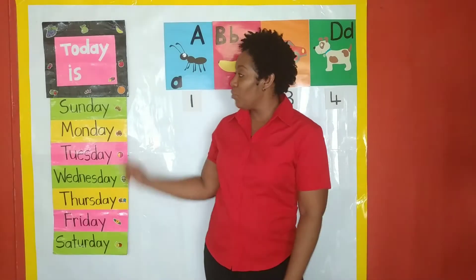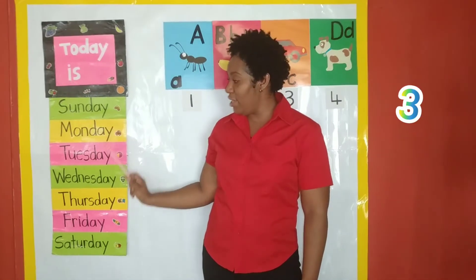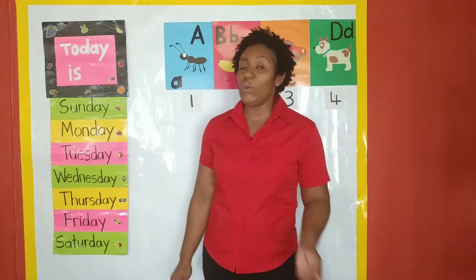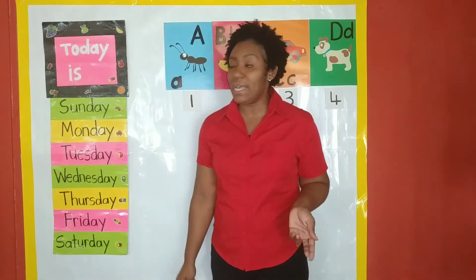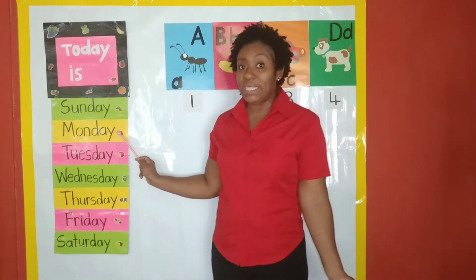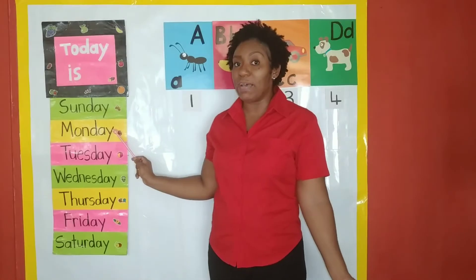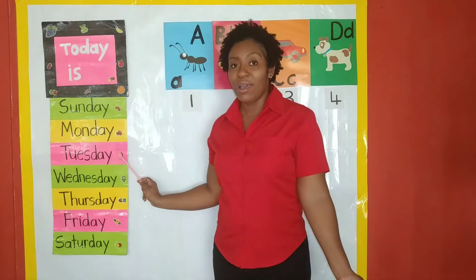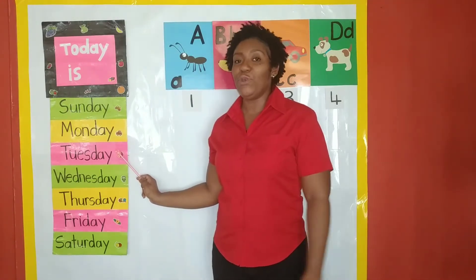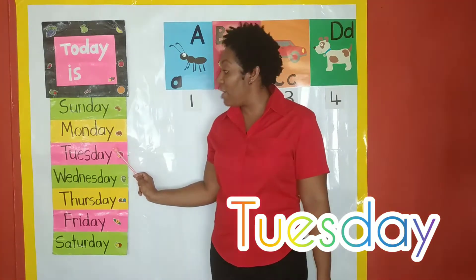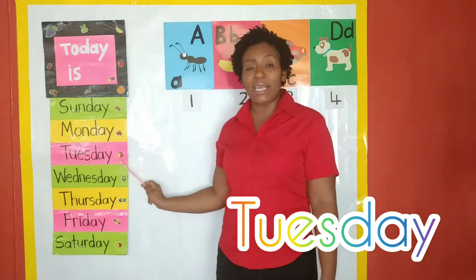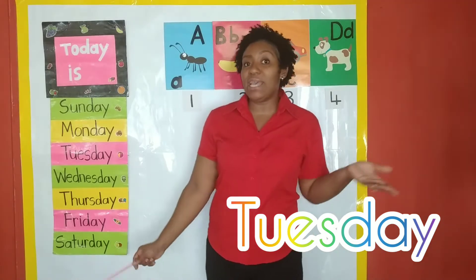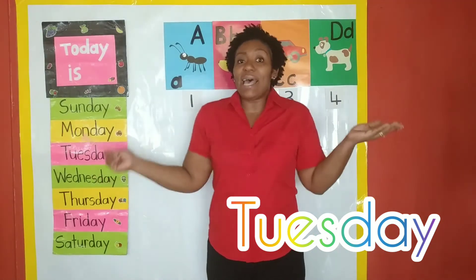Let's count them. One, two, three, four, five, six, seven. So if yesterday was Monday, what day is it today? What comes after Monday? Let's take a step down. What word is this? If you said Tuesday, you are correct. This is the word Tuesday. And today is Tuesday. Today is Tuesday — Tuesday is a happy day.